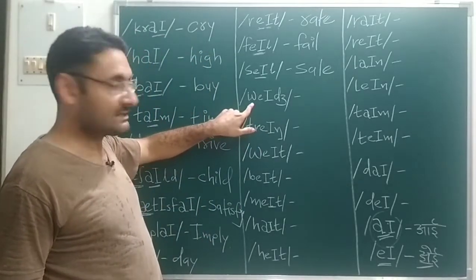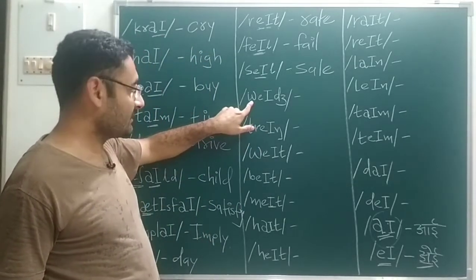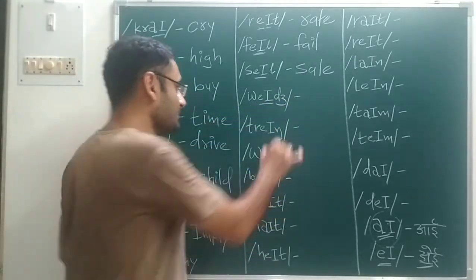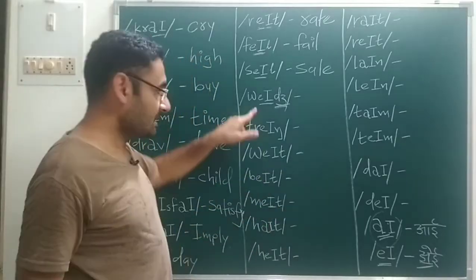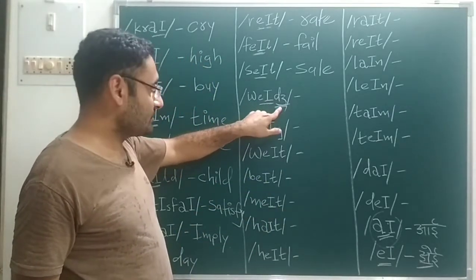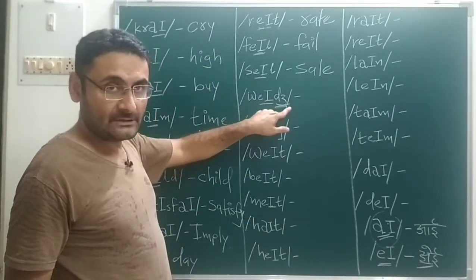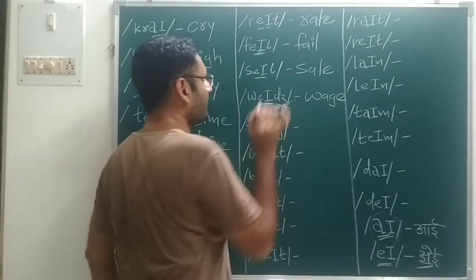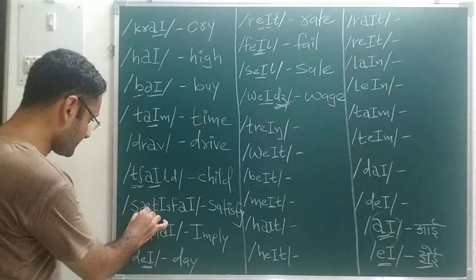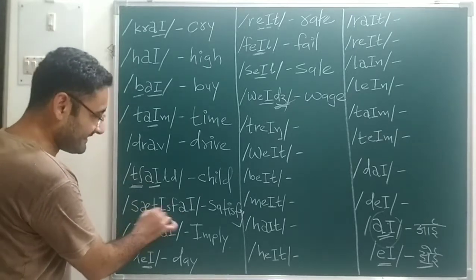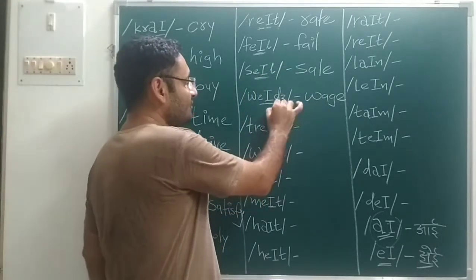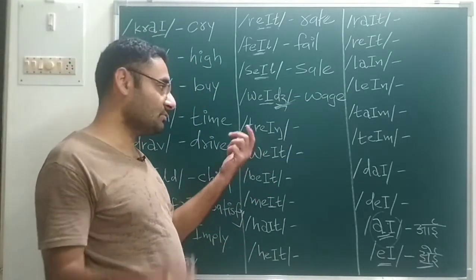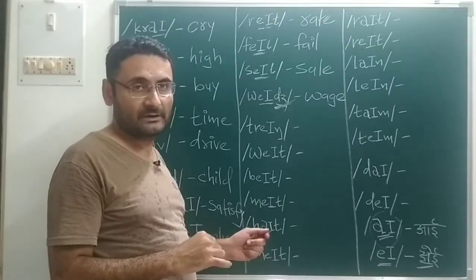Next we will go with: V sound, A sound — V, A — then J sound. All these phonetic symbols we have already done. This type of symbol — that is 'sure' sound — A, J — each and every symbol we have discussed already. So it is better for you to watch that previous video and then come back here.